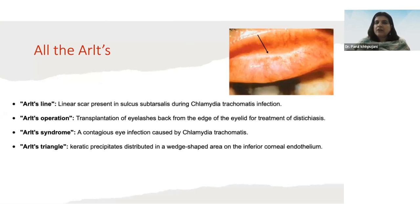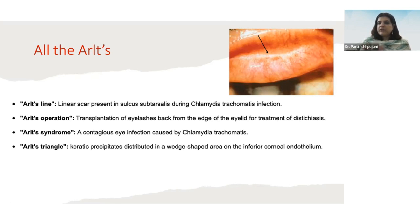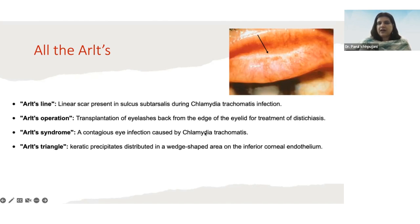Additional Arlt's-related terms to remember: Arlt's line is a linear scar in the sulcus subtarsalis following trachoma infection. Arlt's operation involves transplantation of eyelashes from the edge of the eyelid for treatment of distichiasis. Arlt's syndrome is another word for trachoma. Arlt's triangle is the wedge-shaped inferior corneal area where keratic precipitates deposit due to aqueous convection currents.